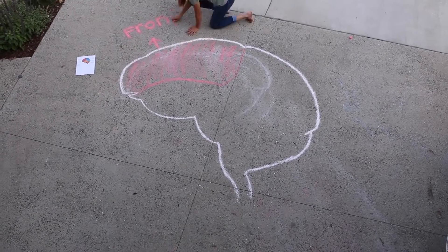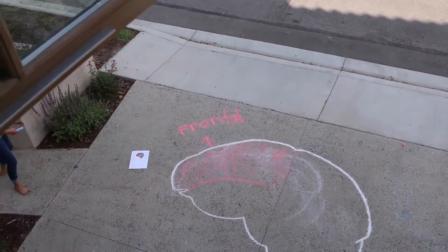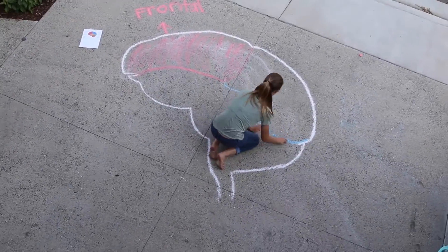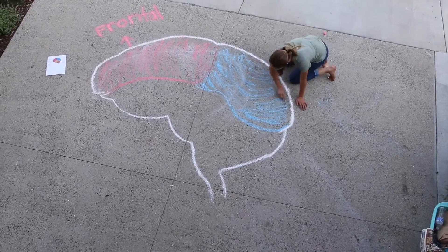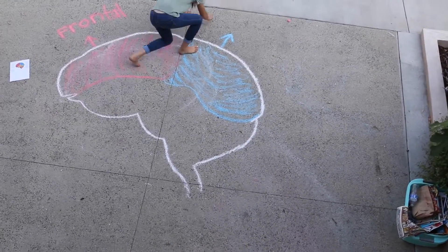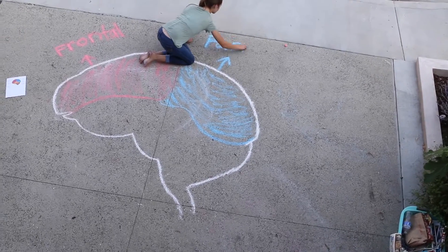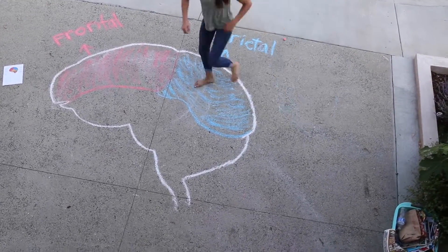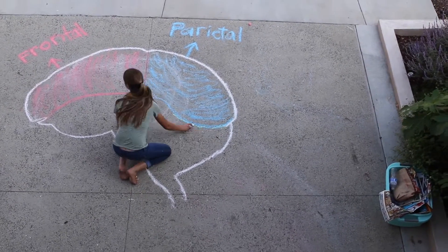Lily is now drawing the frontal lobe. It lies just beyond the forehead. It is the boss of your brain — involved in speaking, muscle movement, and making plans and judgment. It is your emotional control center, providing executive functions. The parietal lobe lies at the top of the head and towards the rear. This part deals with sensory input for touch and body position, and deals with reacting to your environment and senses.